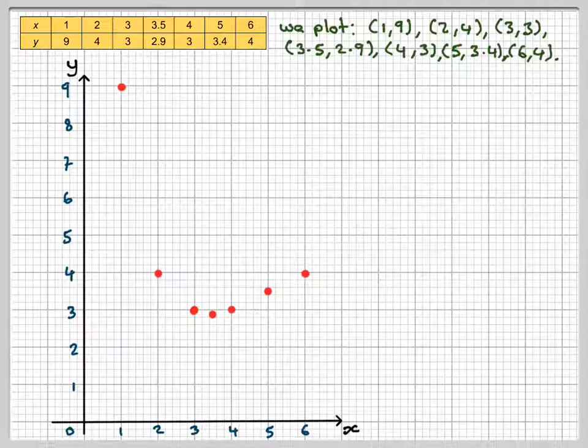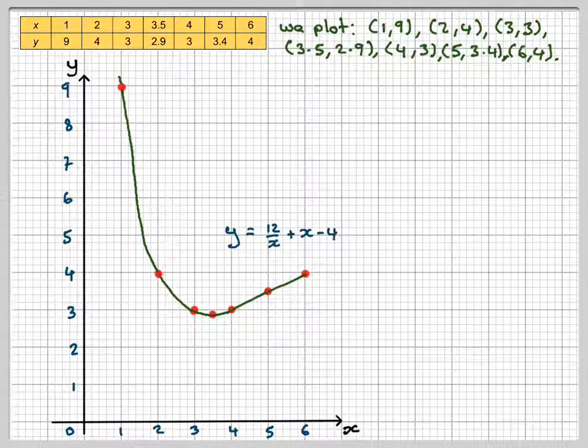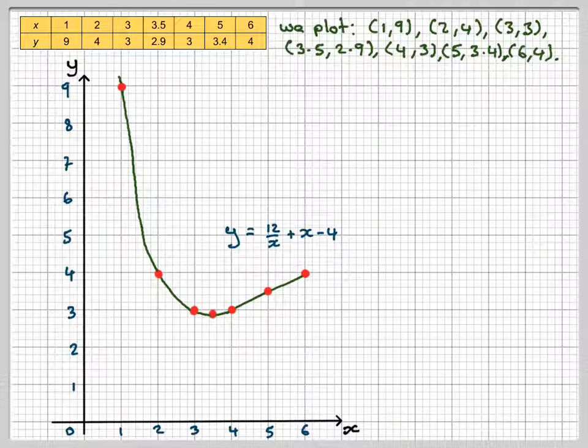We've drawn those up with a nice smooth curve, and we label the curve y = 12/x + x - 4.